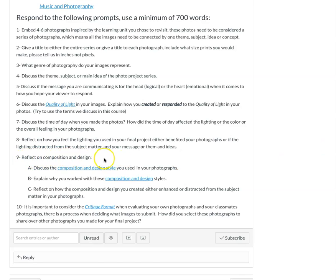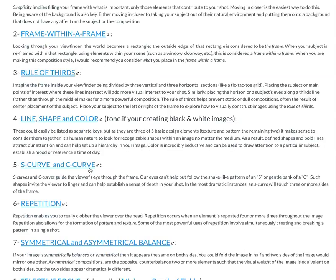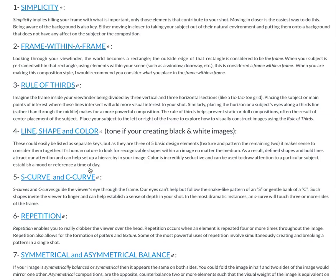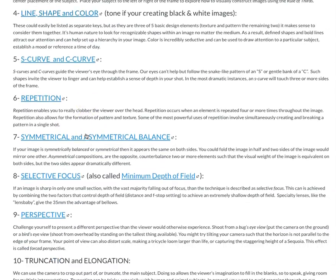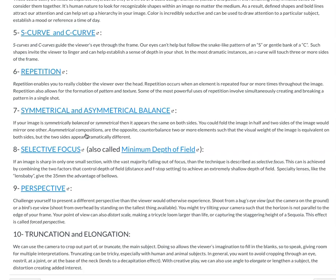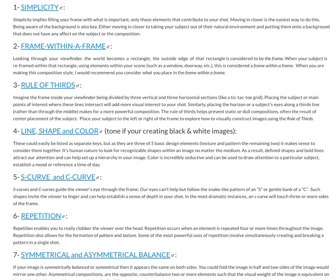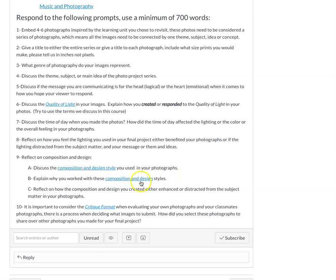I also want you to reflect on composition and design. I've given you a link to revisit the 10 keys of composition. I'd like you to use this language — for example: 'With my final project, I was doing landscape photographs and I was really working with rule of thirds and repetition,' or rule of thirds and simplicity. We've talked about how compositional styles can blend together in one photograph, so reference that in your discussion post and explain why you worked with these compositional designs. Reflect on whether your composition and design enhanced or distracted from the subject matter.